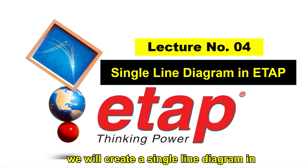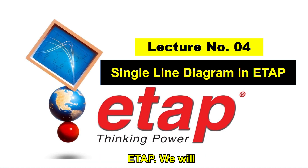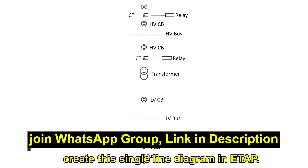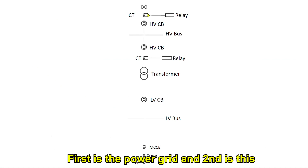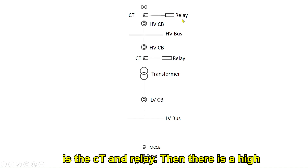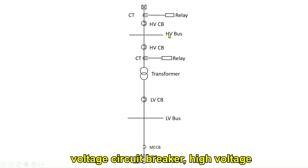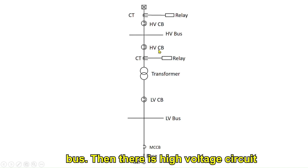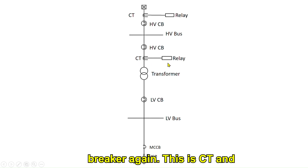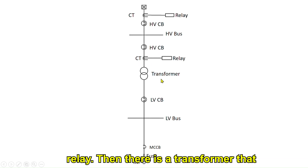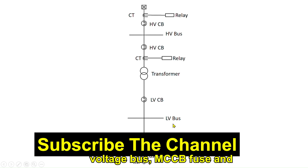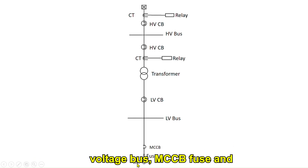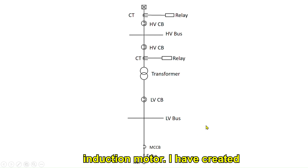In today's lecture we will create a single line diagram in ETAP. We will create this single line diagram in ETAP. First is the power grid, second is the CT and relay, then there's a high voltage circuit breaker, high voltage bus, then another high voltage circuit breaker, CT and relay again, then a transformer, low voltage circuit breaker, low voltage bus, MCCB, fuse, and induction motor.